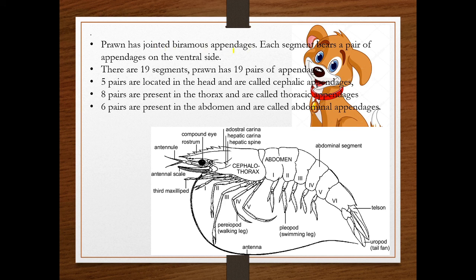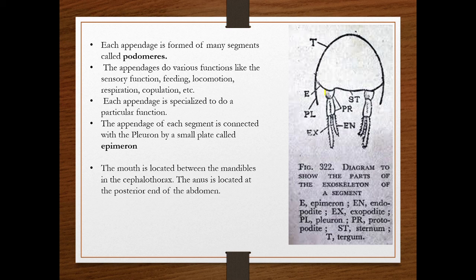The prawn has jointed biramous appendages. Each of the 19 segments has a pair of appendages on the ventral side, giving 19 pairs of appendages in total. The abdominal appendages are called pleopods. Each appendage is formed of many segments called podomeres — 'pod' means legs. The appendages have different functions including sensory, feeding, locomotion, respiration, and copulation.